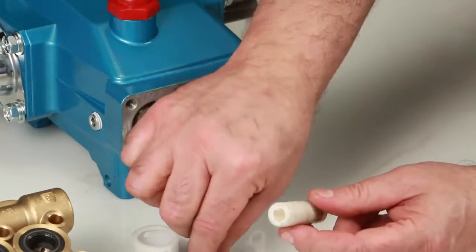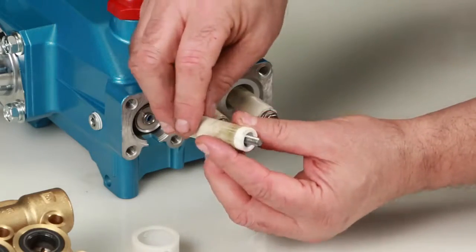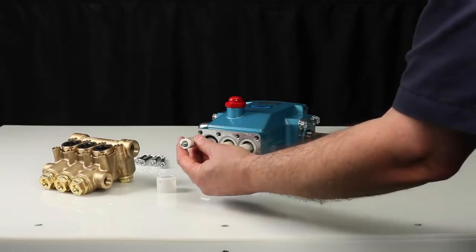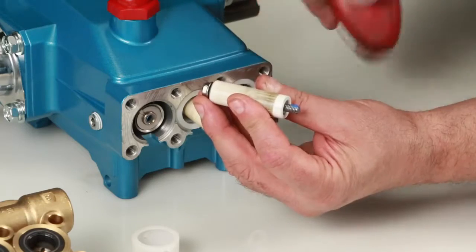Insert the plunger retainer into the plunger. Before installing the plunger assembly, apply thread sealant on the end of the plunger rod.